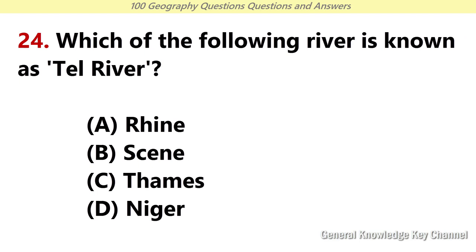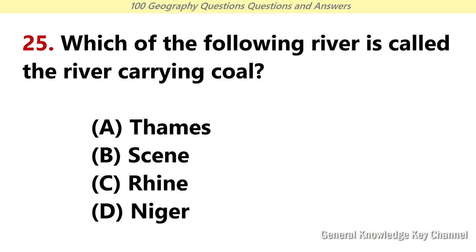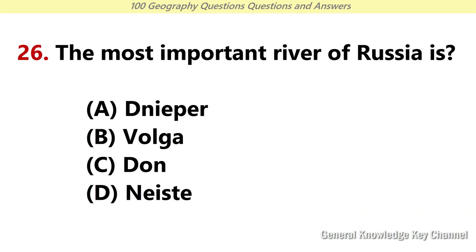Which of the following rivers is known as the Oil River? Answer D: Niger. Which of the following rivers is called the River Carrying Coal? Answer C: Rhine. The most important river of Russia is? Answer B: Volga.